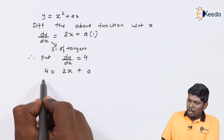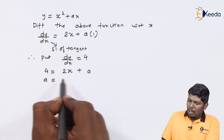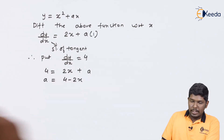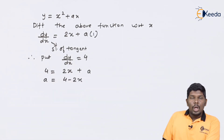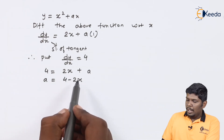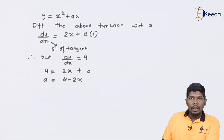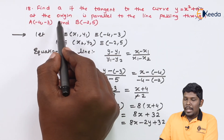The slope of the tangent we have already found is 4. Therefore, putting dy/dx = 4: 4 = 2x + a, which gives a = 4 - 2x. To get the final value of 'a', we need to find the value of x.